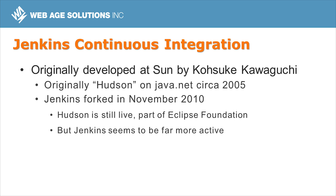Jenkins started out as Hudson. It was developed as a hobby project by Kosuke Kawaguchi while he was working at Sun Microsystems. After Oracle bought Sun, there were some messy disagreements, and the community forked the project and changed the name to Jenkins in 2010. The Hudson project is still alive — Oracle ended up donating it to the Eclipse Foundation — but the Jenkins project is far more active.